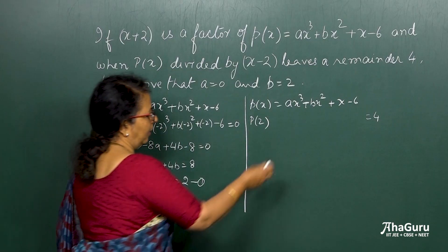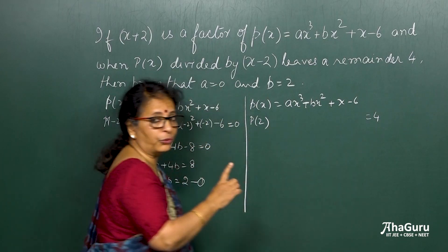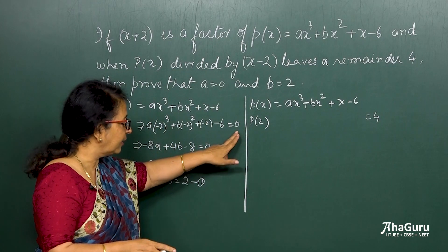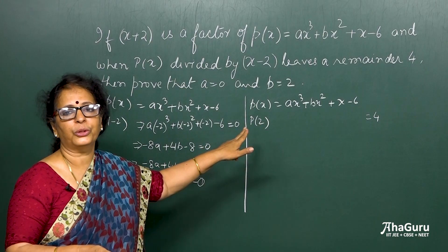So that small difference is very important. And then of course, why it is equal to 4? Because that is the remainder. Here there is no remainder, hence it is equal to 0.